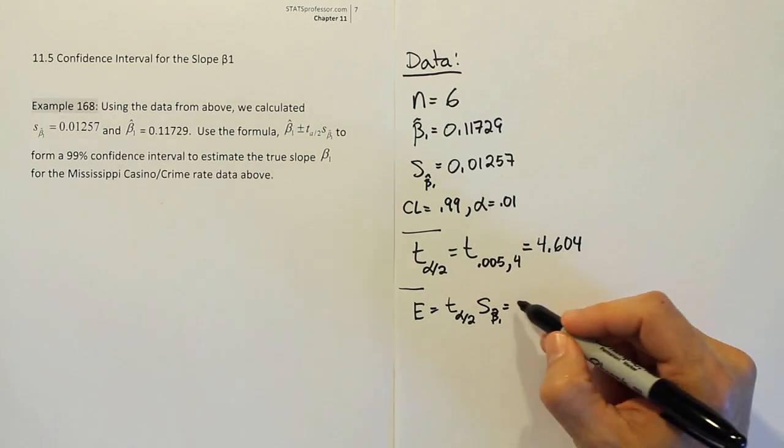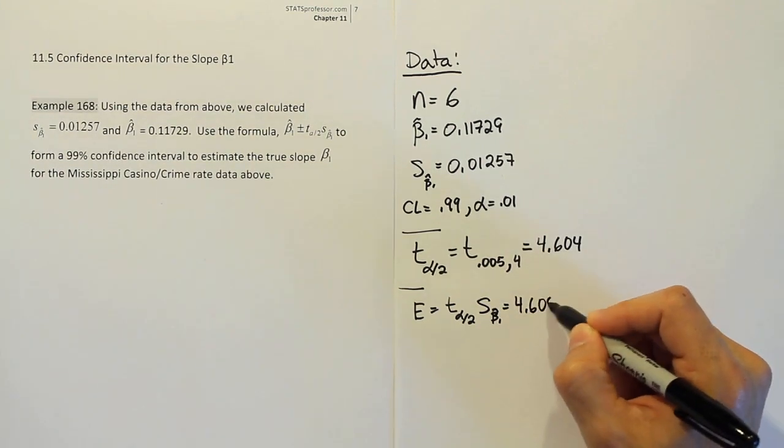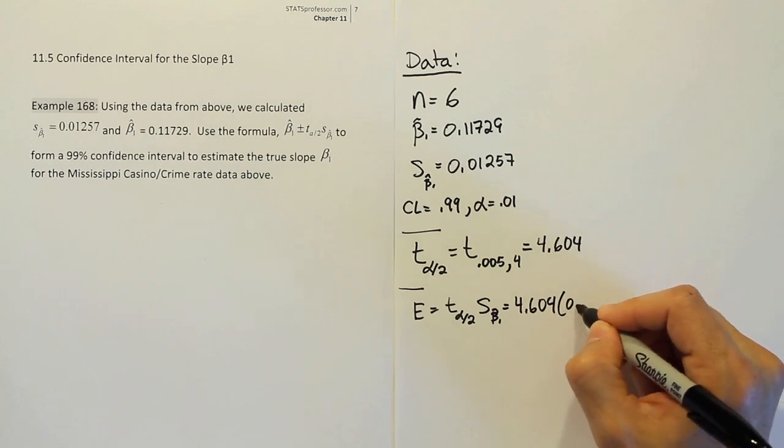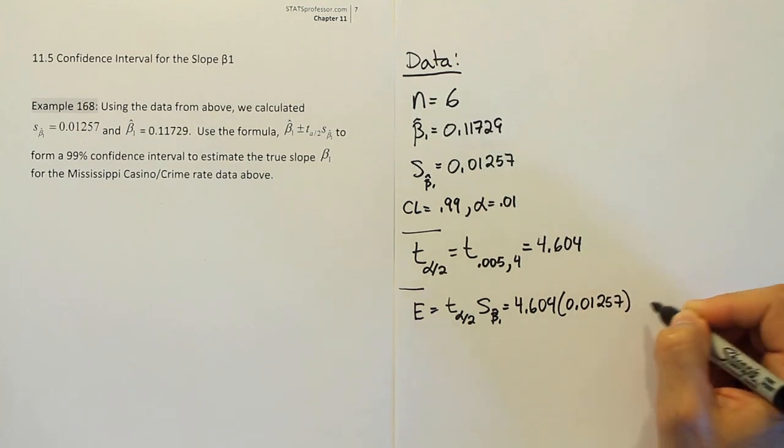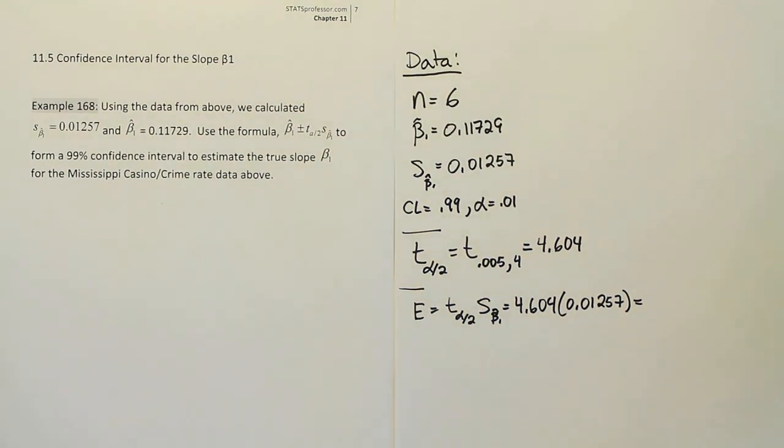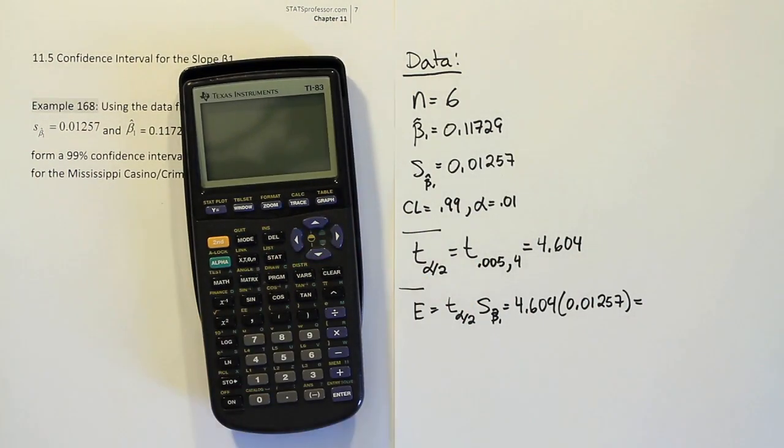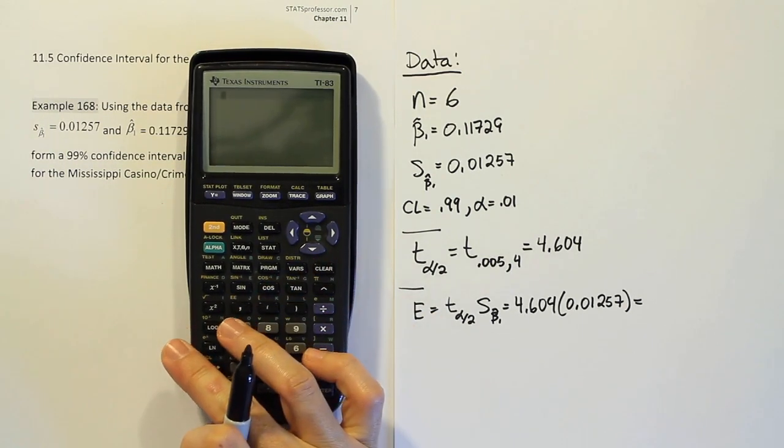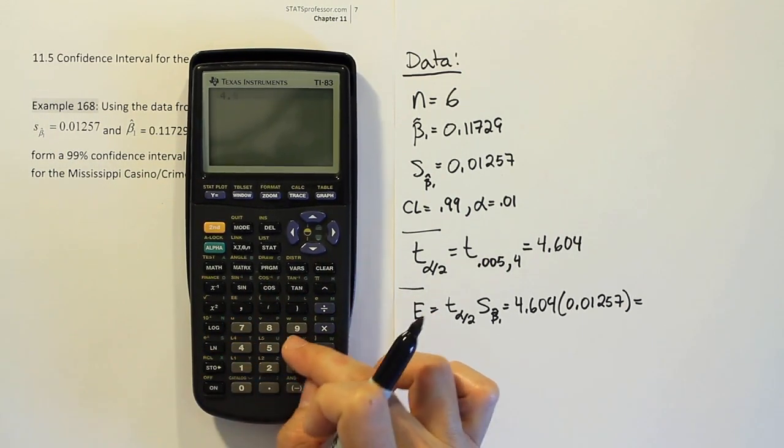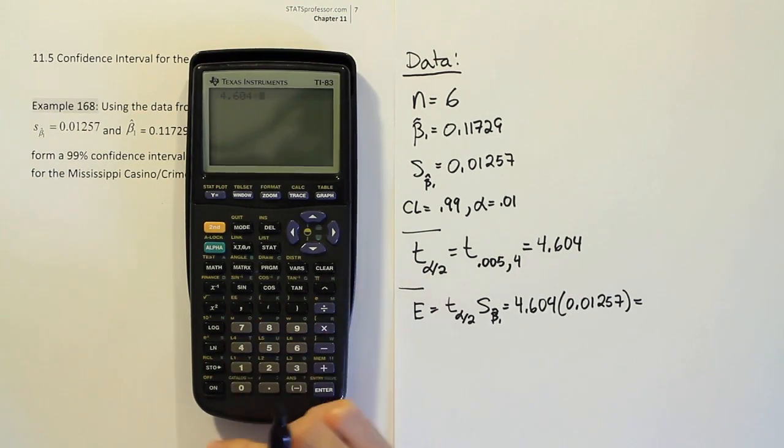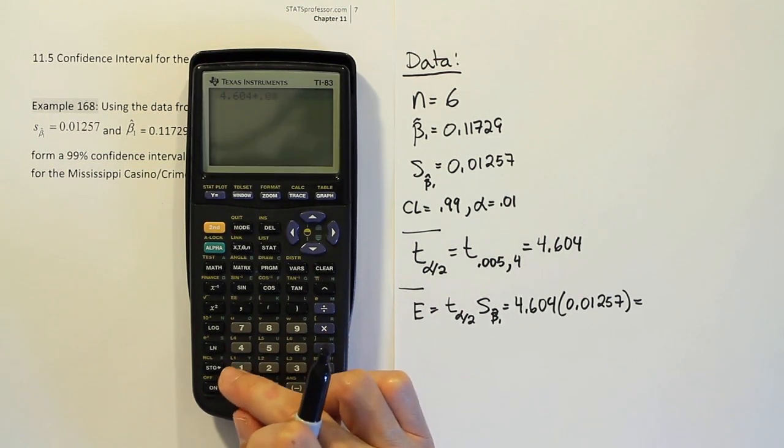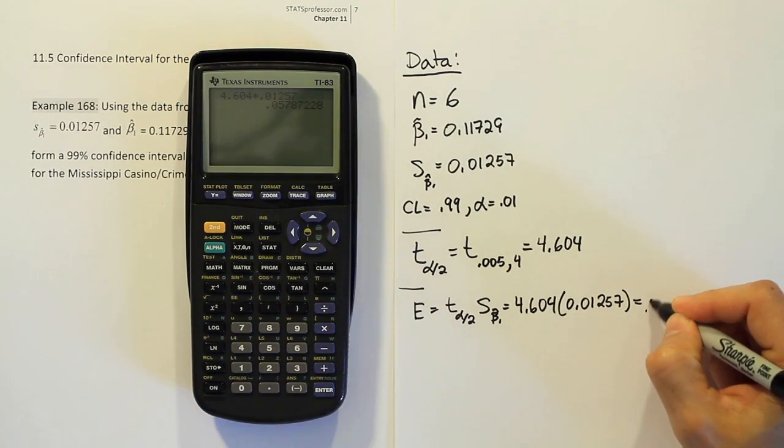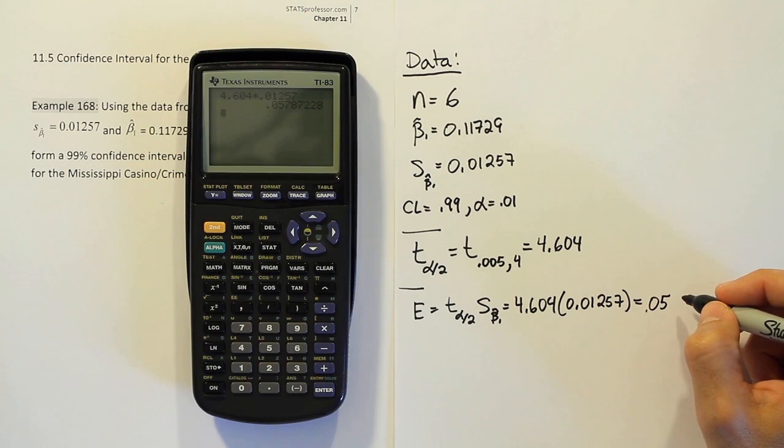Alright, so the t alpha divided by 2 is 4.604 times the standard error, which is given above. That's 0.01257. Alright, let's work that out in our calculator and see what that ends up giving us. So, I still have the work there from the previous problem, as you saw. So 4.604 times 0.01257.